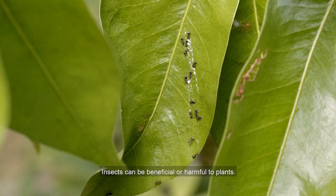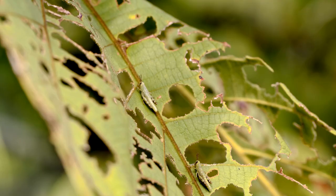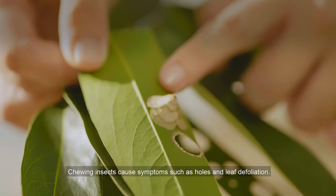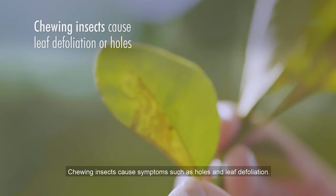Insects can be beneficial or harmful to plants. Pest insects feed on plants by either chewing or sucking the sap. Chewing insects cause symptoms such as holes and leaf defoliation.